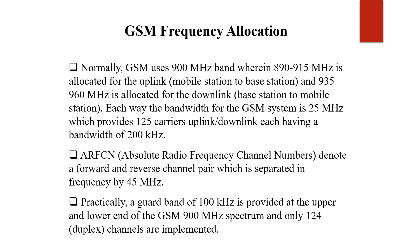GSM uses the 900 MHz band, where 890 to 915 MHz is allocated for uplink — that is, from mobile station to base station — and 935 to 960 MHz for downlink — that is, base station to mobile station. Each way bandwidth for the GSM system is 25 MHz, providing 125 carriers for uplink and downlink, each having 200 kHz bandwidth.